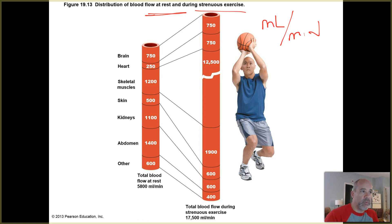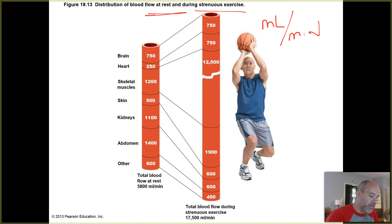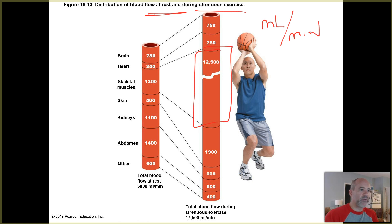When you're exercising, it's not a surprise that your skeletal muscles receive about 1,200 milliliters per minute at rest, and that increases up to about 1,500 milliliters per minute during exercise. Blood flow to the surface of the skin also increases, which helps you radiate heat outward and cool your body off.